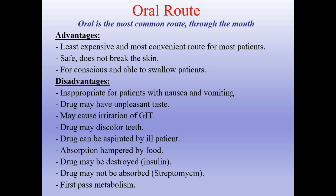Now let's describe some main routes in more detail. Oral route is the most common route — through the mouth. Advantages: least expensive and most convenient, safe (doesn't break the skin), suitable for conscious patients able to swallow. Disadvantages: inappropriate for patients with nausea and vomiting, drug may have unpleasant taste, may cause GIT irritation, drug may discolor teeth, can be aspirated by ill patients, absorption hampered by food, drug may be destroyed (e.g., insulin), may not be absorbed (e.g., streptomycin), and there is first-pass metabolism, which we will discuss in the next lecture.